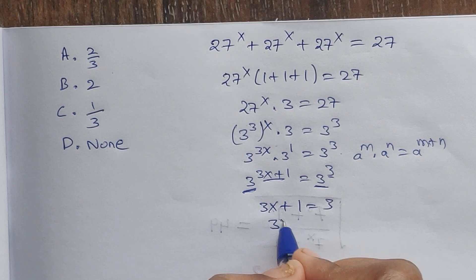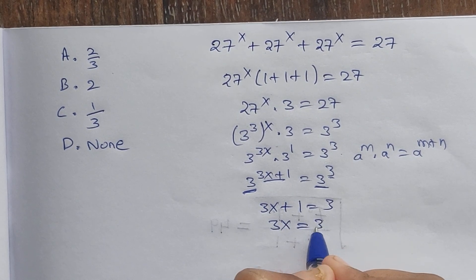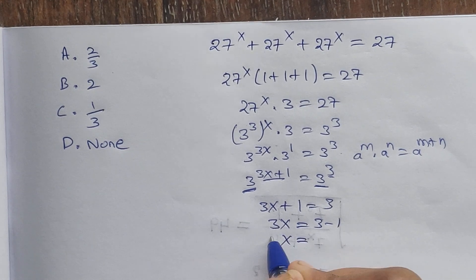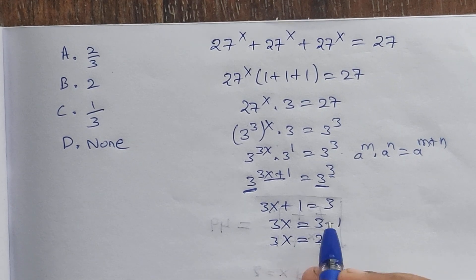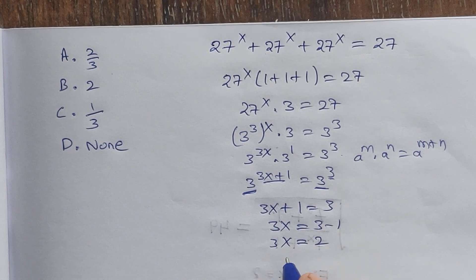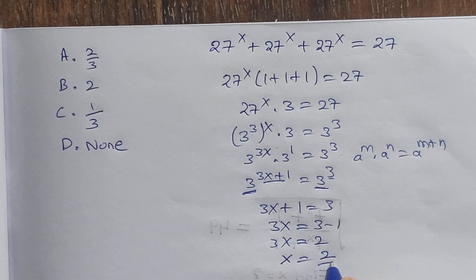So 3x = 3 - 1, which equals 2. Therefore x = 2/3.